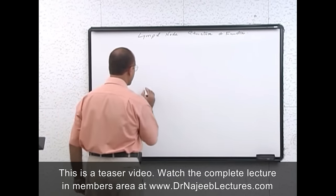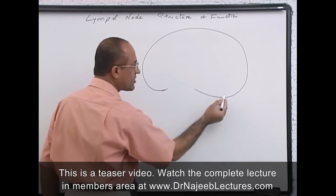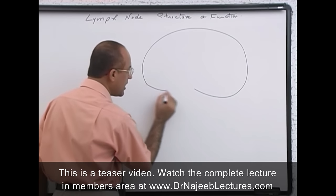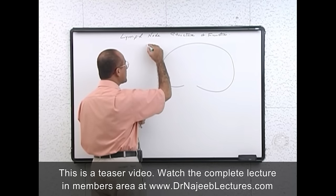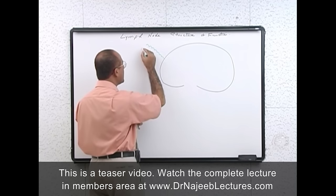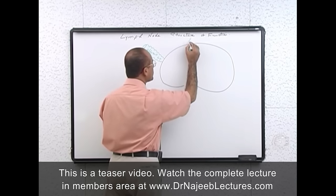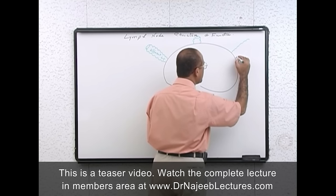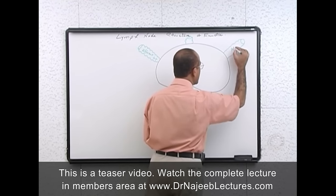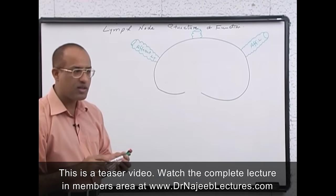Let me draw one lymph node here. A lymph node has one convex surface and one concave surface. On its convex surface, it is receiving the lymph from the afferent lymphatics. So lymph is coming to the lymph node through afferent lymphatics, and these afferent lymphatics are connected to the convex surface of the lymph node.